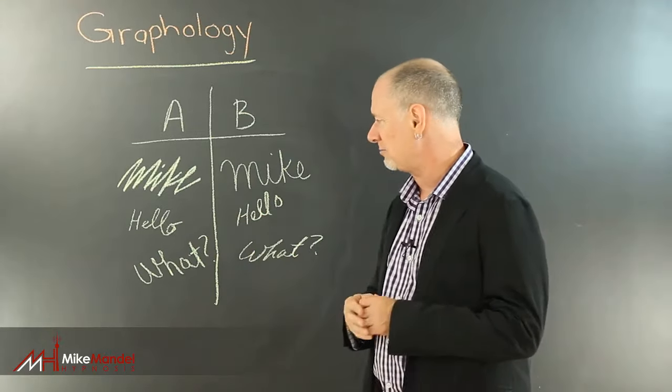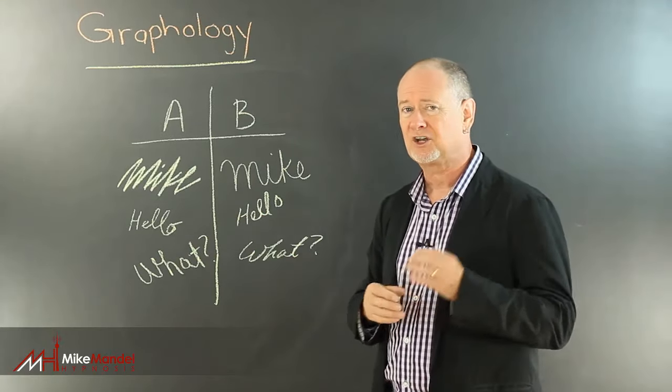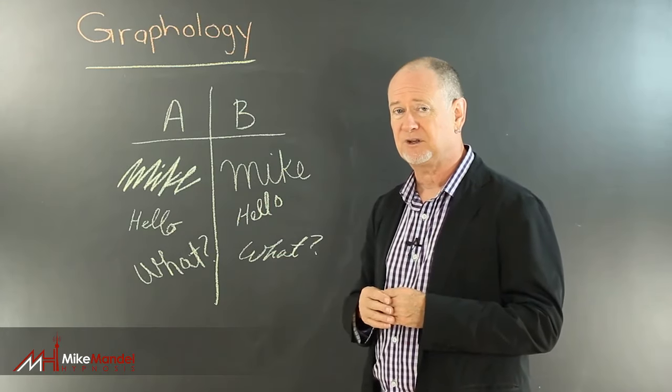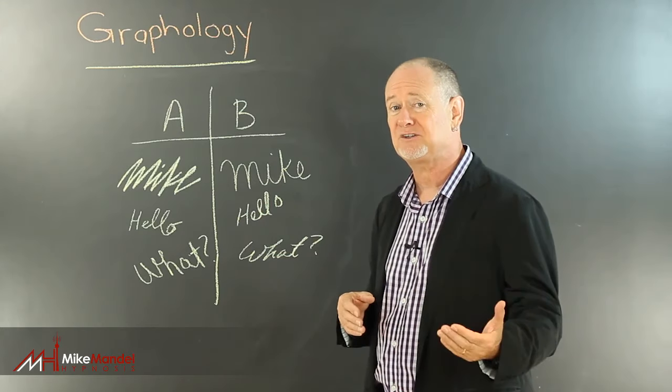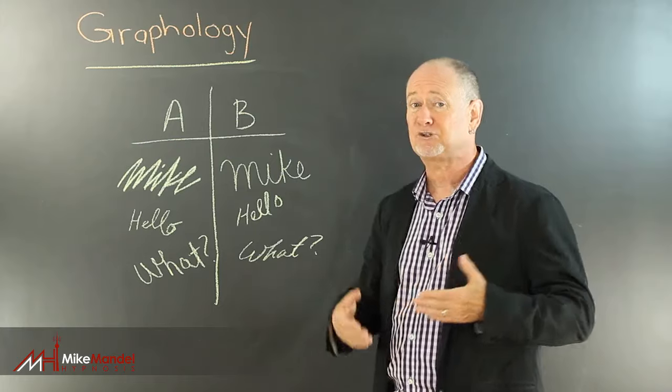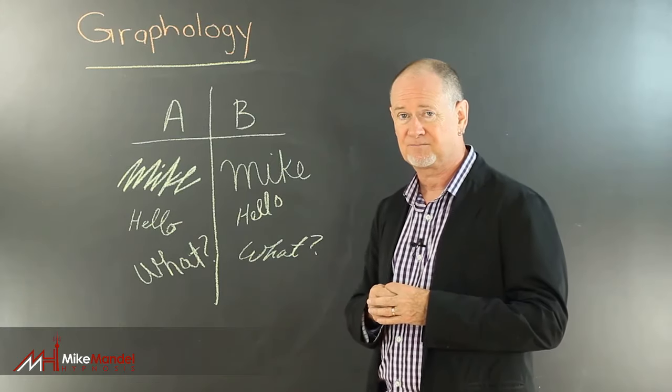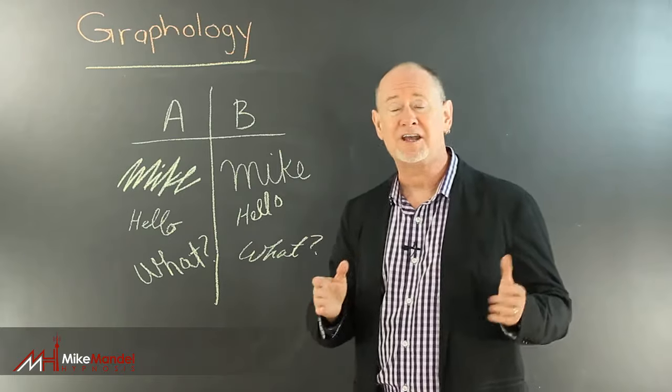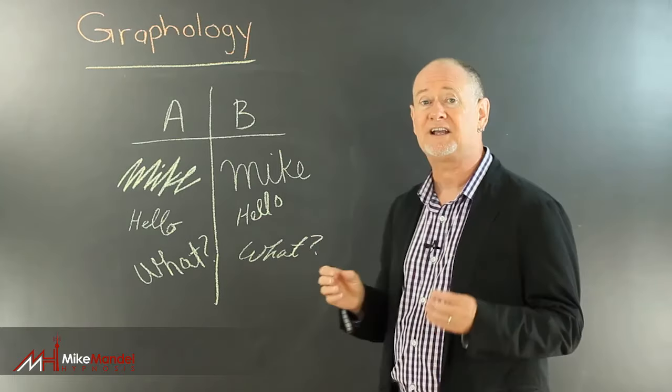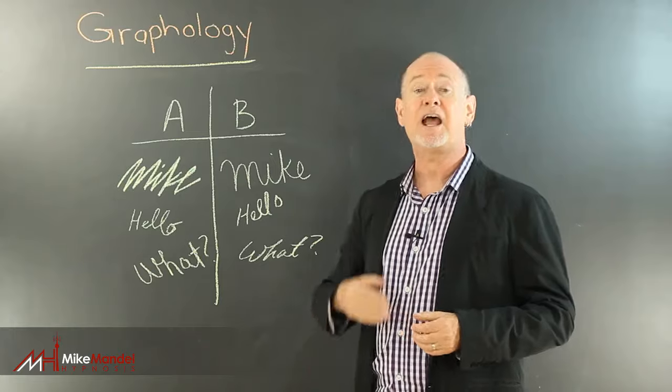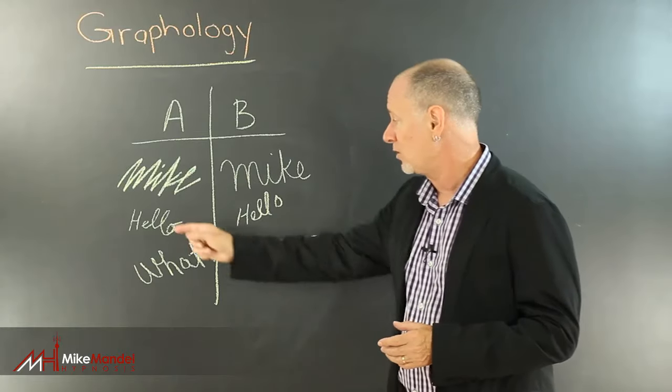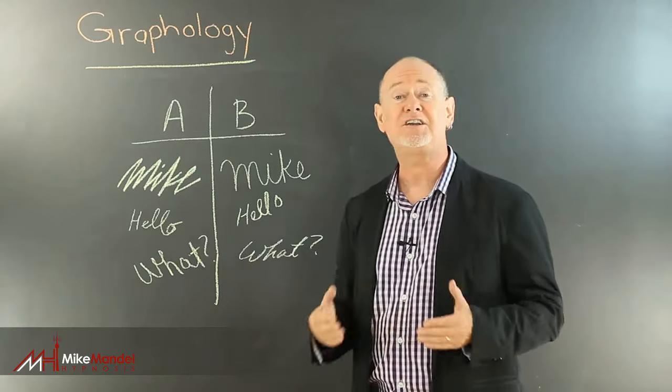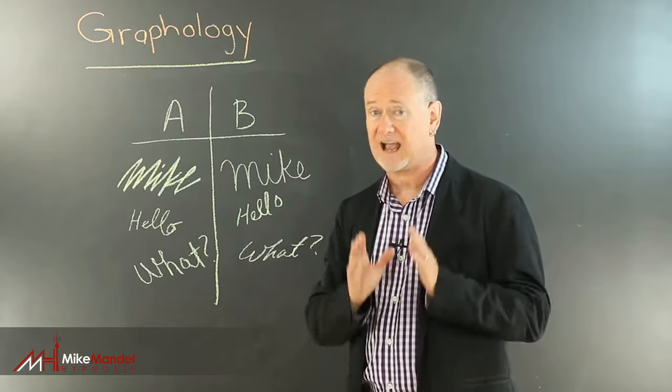What about the second example? Hello. The question is, which one is feeling optimistic and which one is feeling pessimistic? Or which one is up and which one is down, to make it even simpler? If you pick that B is the more optimistic, you're correct. Because the upward slope to the writing is a clear sign of optimism and positive attitude at that time, where the way this word drops is an indicator of feeling down or depressed at that moment.